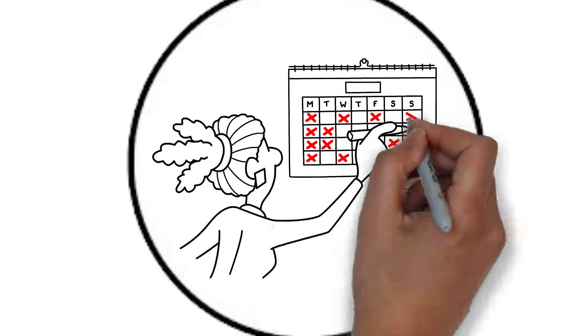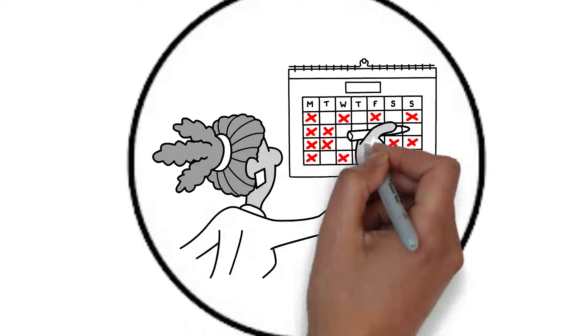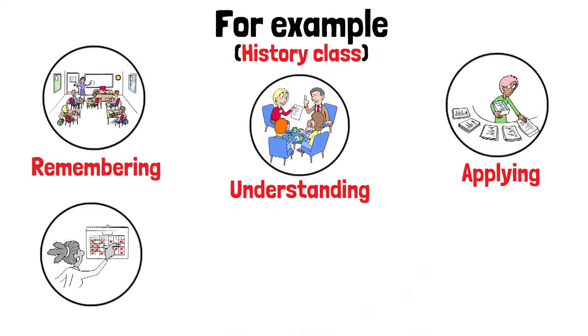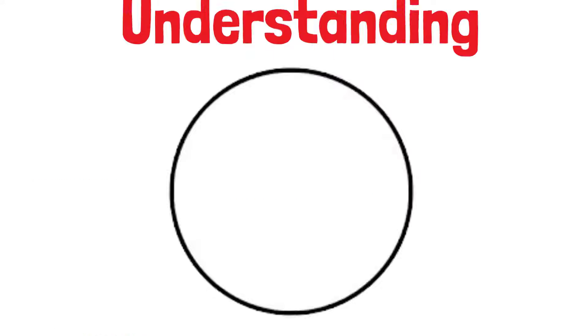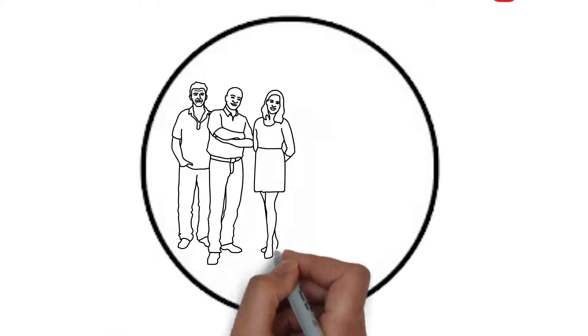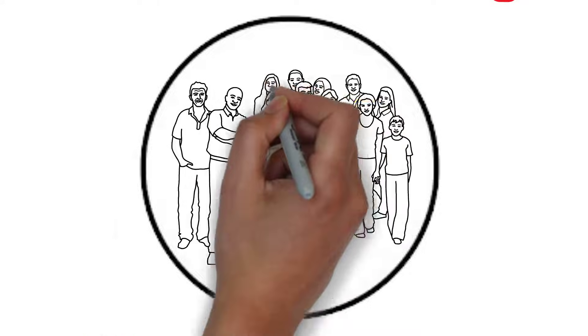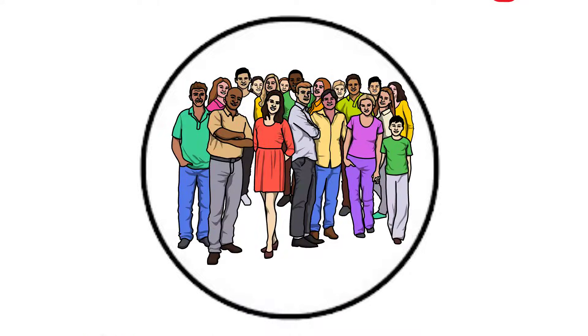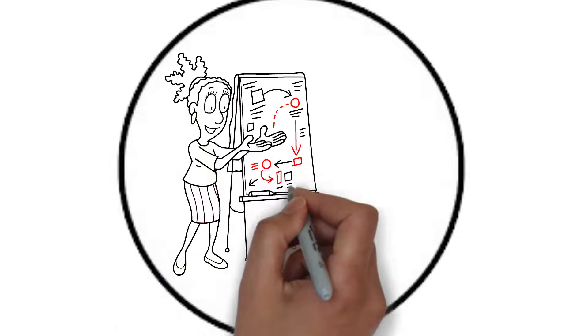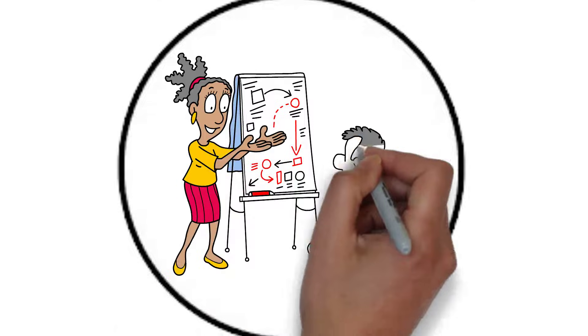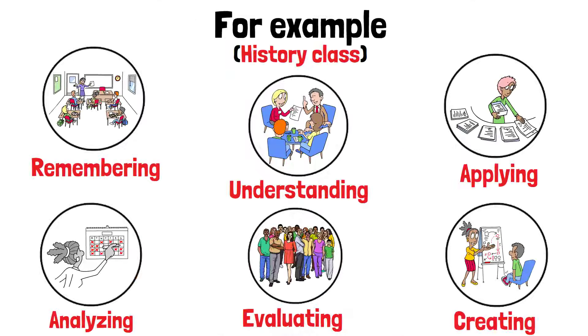They might then analyze different historical sources to understand various perspectives on the events — analyzing. Students could evaluate the impact of these events on current society — evaluating — and finally create a presentation or project that connects past events to modern issues — creating.